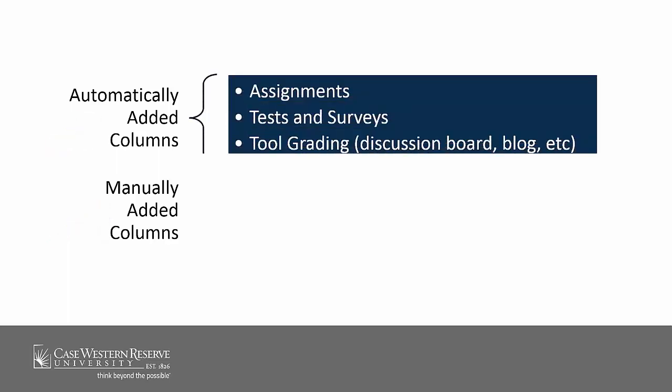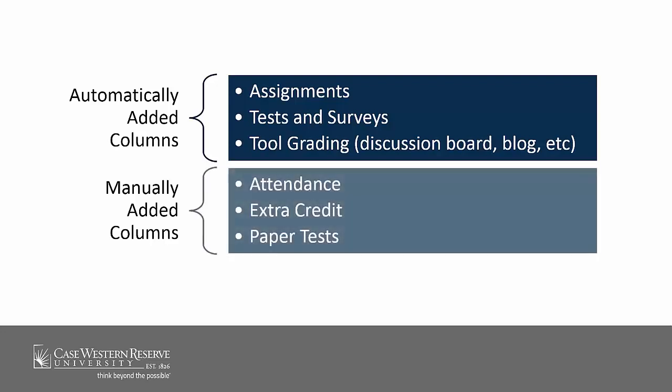For example, if you create a Blackboard assignment, test, or survey, or set up grading within a discussion board or blog, a column will be automatically created. For other things, like attendance, extra credit points, or a paper test, you'll need to manually create the column.